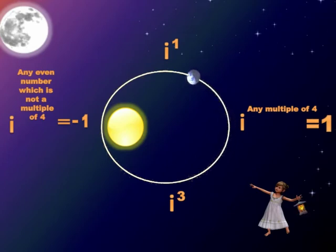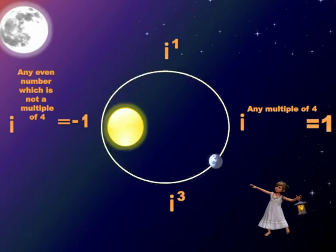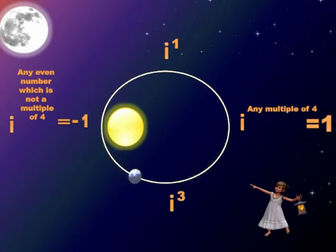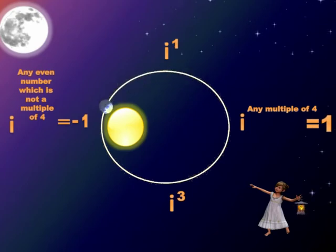This is even applicable for extremely large numbers. For example, 40,000 is a multiple of 4 so i raised to 40,000 equals 1, but i raised to 40,002 equals minus 1. Similarly, i raised to 80,000 equals 1, but i raised to 80,002 equals minus 1.